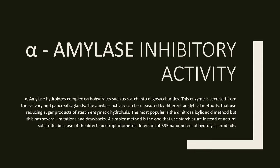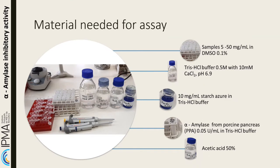For the amylase inhibitor activity assay, the materials needed are: samples dissolved in DMSO 0.1%, Eppendorf tubes, Tris-hydrochloride buffer 0.5 molar with 10 millimolar of calcium chloride at pH 6.9, 10 milligrams per milliliter of starch azure in Tris-hydrochloride buffer, alpha-amylase from porcine pancreas at 0.05 units per milliliter in Tris-hydrochloride buffer, and acetic acid 50 percent.